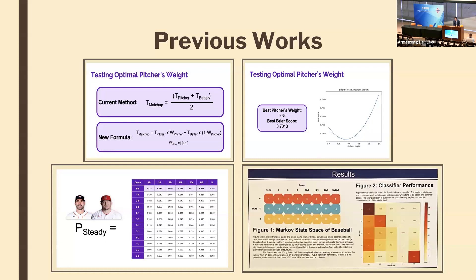Last year, NYU students Jeff Jin and Chris Chen took this a little bit further. Instead of assuming equal value to the pitcher and batter distribution, they used Brier's score to find the optimal weights when determining matchup outcomes. They found 34% of the outcome is determined by the pitcher, while 66% is determined by the hitter.